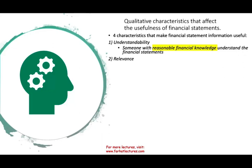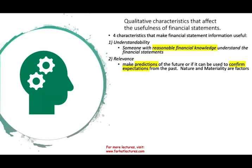The second characteristic is relevance. The information provided must help users make predictions, specifically about future cash flows. For example, reporting accounts receivable at net realizable value is relevant because it tells you how much credit was sold and how much cash is expected in the future. Relevance also includes confirming expectations — whether actual cash received matched predictions. Both the nature of the information and materiality are factors in relevance.